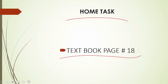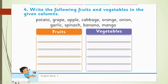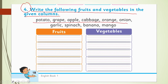Home task: textbook ke page 18 pe aap ka home task hai — page number 18. Ek chhoti si activity hai jo aap khud se bhi kar sakte hain: 'Write the following fruits and vegetables in the given columns.' Kuch list hai fruits ki aur vegetables ki — inko mix kiya hua hai. Aap ne inko ek ek kar ke padh ke, fruit ko fruit mein likhna hai aur vegetable ko vegetable mein likhna hai.